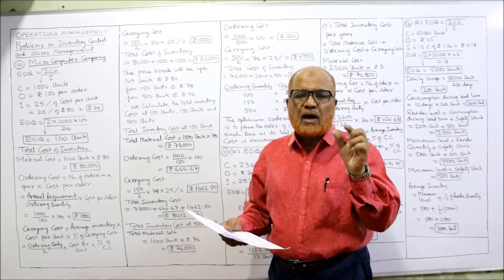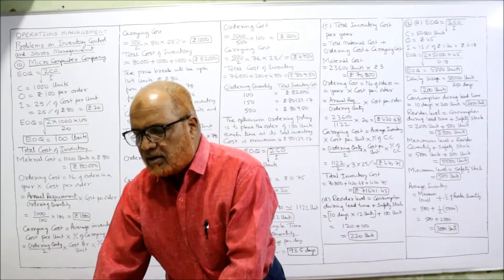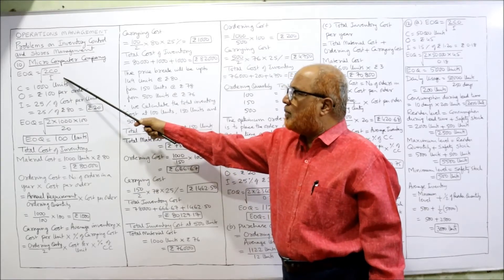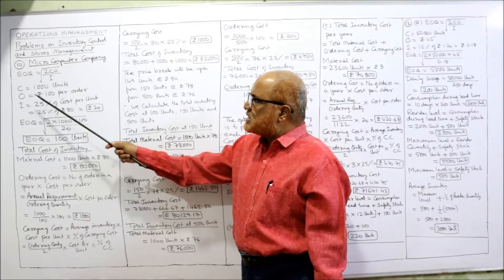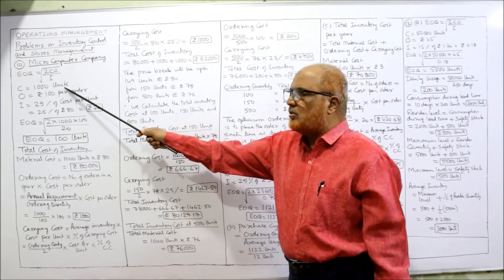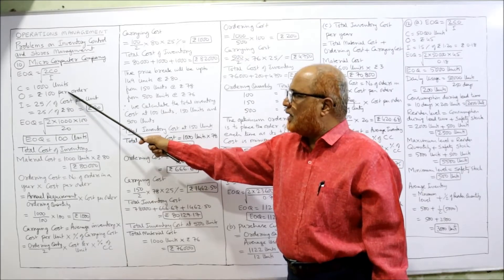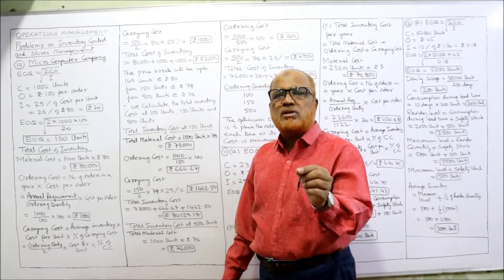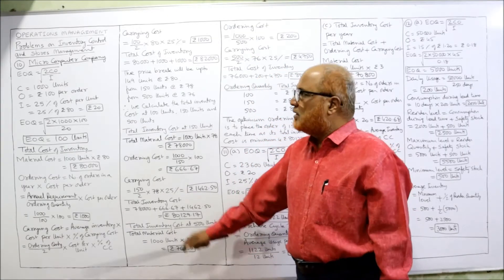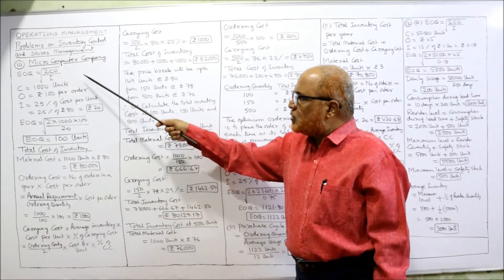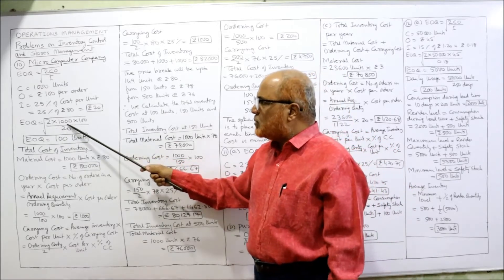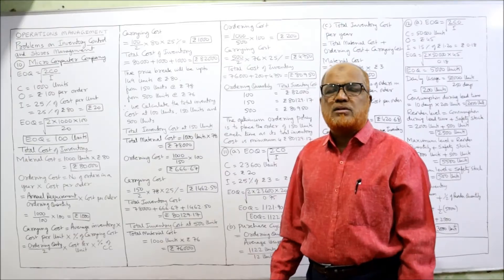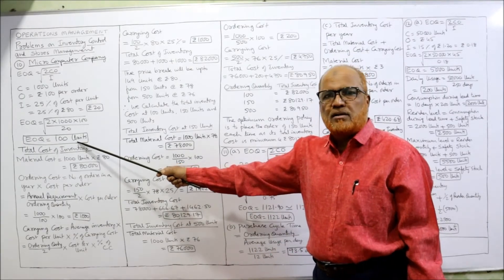Total inventory cost means material cost plus ordering cost plus carrying cost. EOQ formula: 2CO/I under root. C is annual usage = 1,000 units, O is ordering cost = 100 rupees, I is carrying cost per unit per annum = 25% of 80 rupees = 20 rupees. Substituting: √(2×1000×100/20) = 100 units. So EOQ = 100 units.